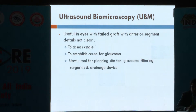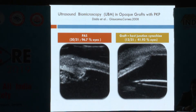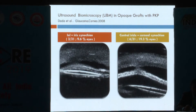Ultrasound biomicroscopy is useful in eyes where anterior segment details are unclear due to a failed graft. It can be used to assess angles, establish the cause of glaucoma, and is a useful tool for planning the site for glaucoma filtering surgeries. Features of UBM include visualization of PAS, graft-host junction synechiae, and central iridocorneal synechiae, as depicted by Dada et al. in a Cornea 2008 study.